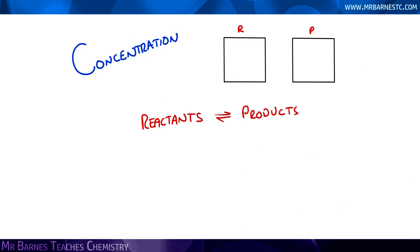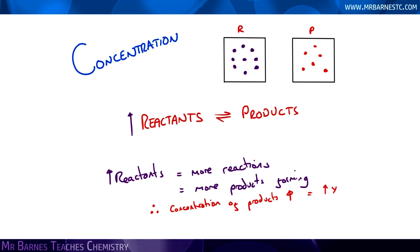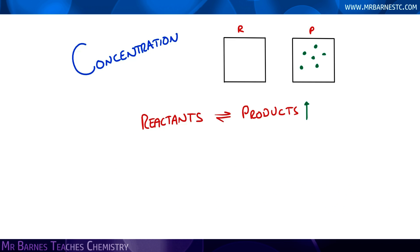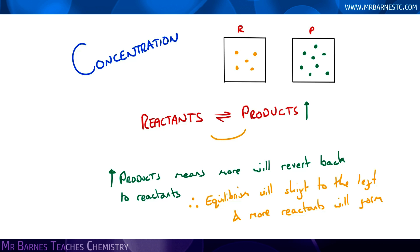Onto concentration. This is a little bit different because you have to know which one you're increasing the concentration of — either the reactants or the products. If you increase the number of reactants, you have more reactions occurring — more particles colliding together. If you've got more products forming, the concentration of the products will go up, and therefore I will have a higher yield of products and the equilibrium will have shifted to the right. If I increase the concentration of the products, the reverse happens — more products revert back into my reactants, equilibrium will shift to the left, and I will have a lower yield of my products and a higher yield of my reactants.